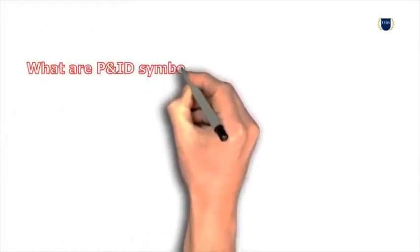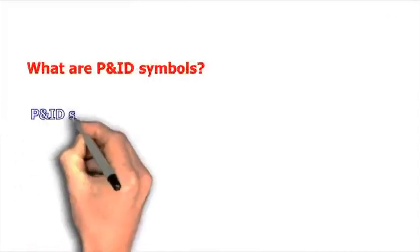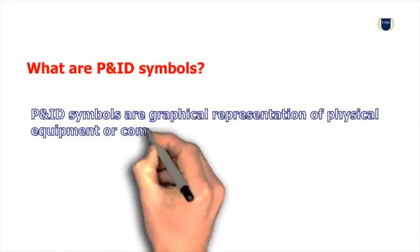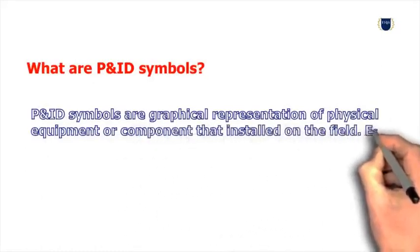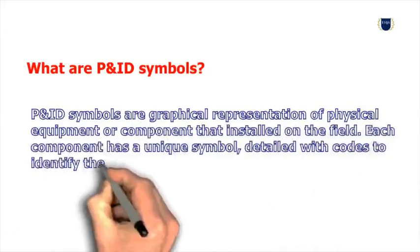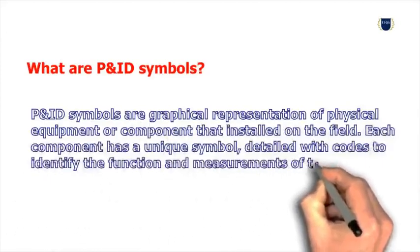What are P&ID symbols? P&ID symbols are graphical representations of physical equipment or components that are installed in the field. Each component has a unique symbol, detailed with codes to identify the function and measurements of the device.